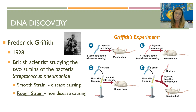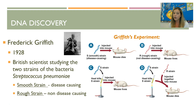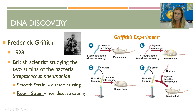The first scientist to attempt to answer this question was Frederick Griffith in 1928, and he studied two strains of the bacteria that causes pneumonia. There is a smooth strain, which does cause the disease, and a rough strain, which does not. He injected the smooth disease-causing strain into a mouse and saw that the mice die, then he injected the rough strain and saw that the mouse lives.